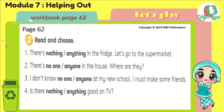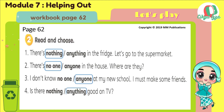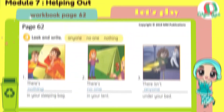Activity two: read and choose. Number one: There's nothing in the fridge. Let's go to the supermarket. Number two: There's no one in the house. Where are they? Number three: I don't know anyone at my new school. I must make some friends. Number four: Is there anything good on TV?